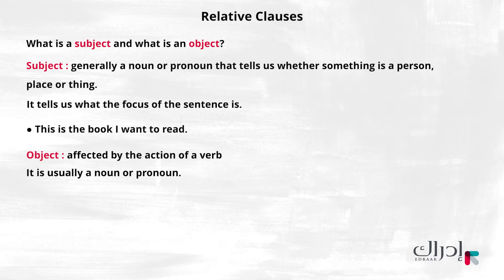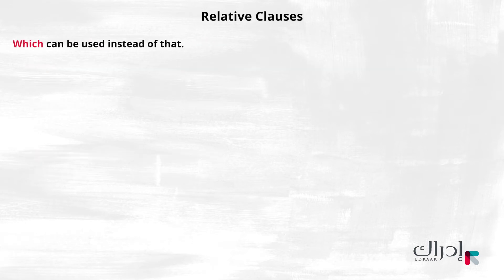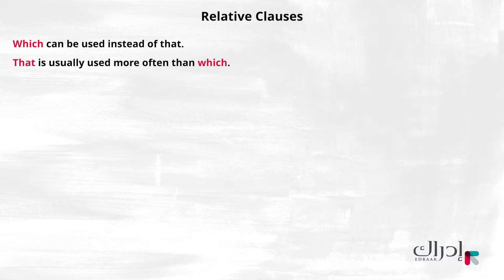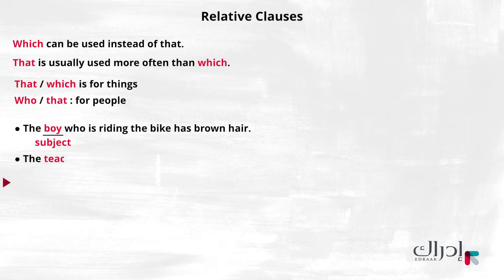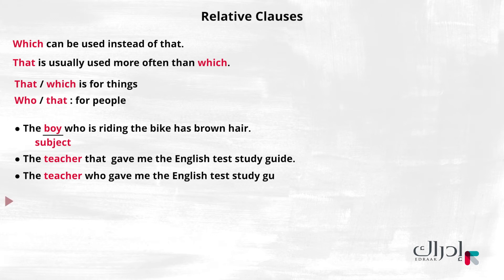Now that we have an idea about relative clause structure, here are a few more things to remember. 'Which' can be used instead of 'that,' but 'that' is usually used more often than 'which.' If the noun is the subject of a relative clause, it must be followed by 'that,' 'which,' or 'who.' 'That' and 'which' are for things; 'who' and 'that' are for people. Example: 'The boy who is riding the bike has brown hair.' In this example, 'boy' is the subject of the verb 'has,' therefore you cannot drop the relative pronoun. 'The teacher that gave me the English test study guide.' 'The teacher who gave me the English test study guide.' Here, 'teacher' is the subject of the verb 'gave,' so you cannot drop the relative pronoun.